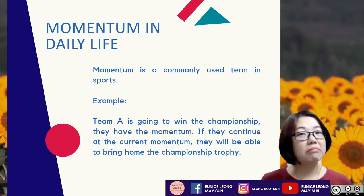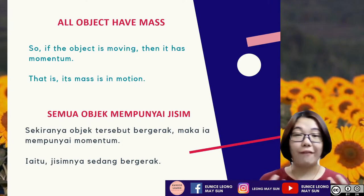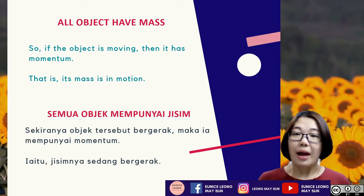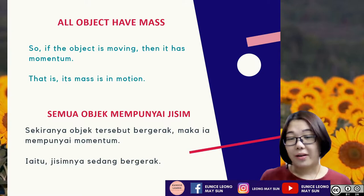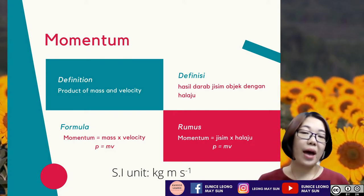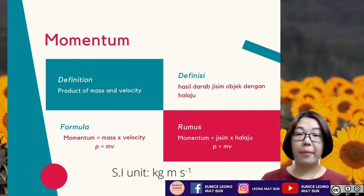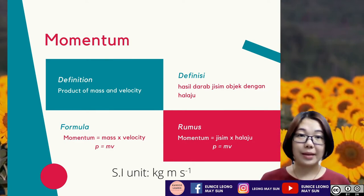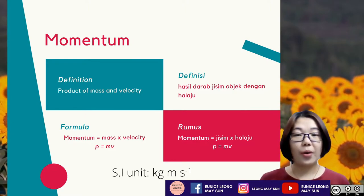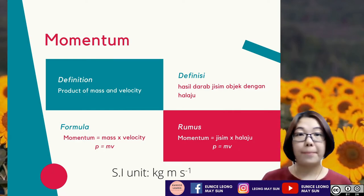But what does momentum mean in physics? All objects have mass, so if an object is moving, it has momentum. That is to say, momentum is a mass that is in motion. Momentum is defined as the product of mass and velocity. The formula to calculate momentum is mass multiplied by velocity, where P is the symbol for momentum, M is the symbol for mass, and V is the symbol for velocity. So the formula is P equals MV, and from that we get the SI unit of momentum, which is kg meter per second.